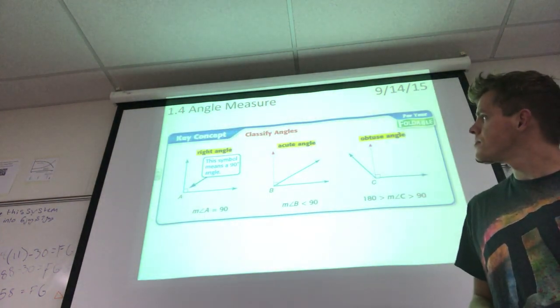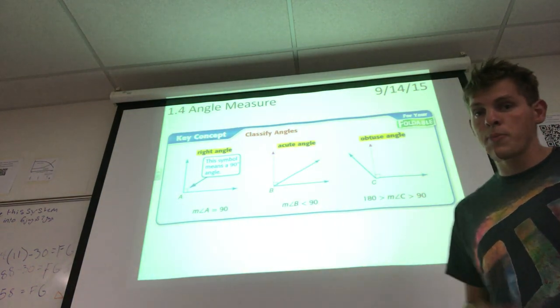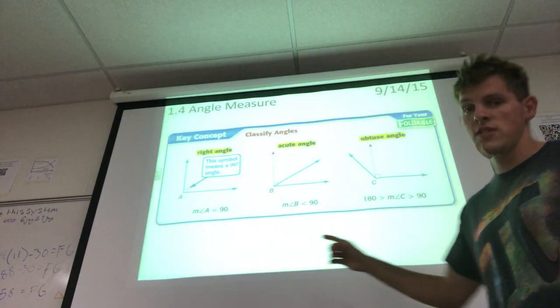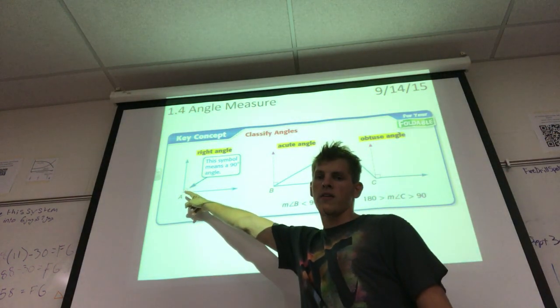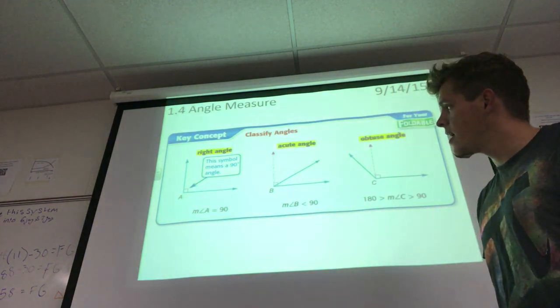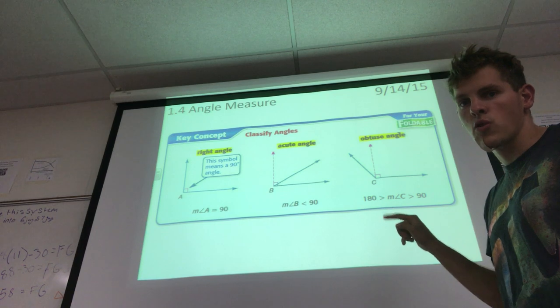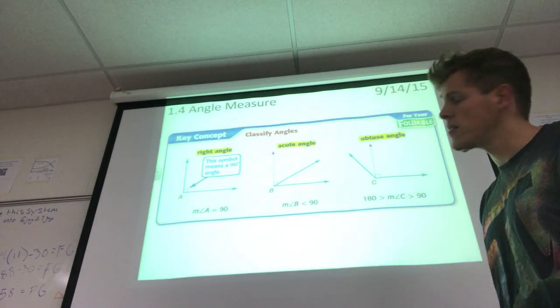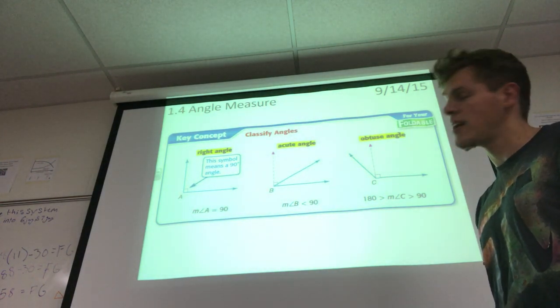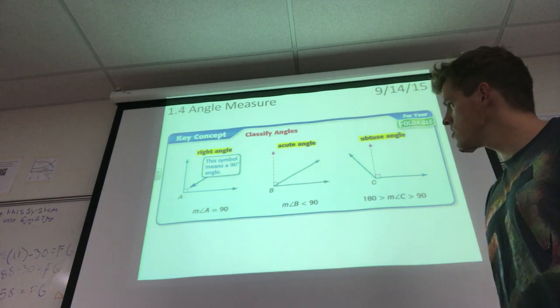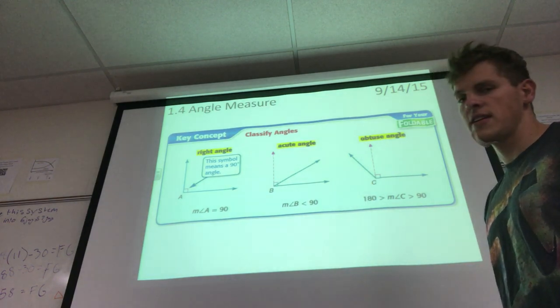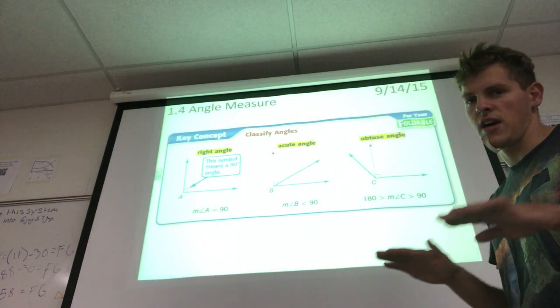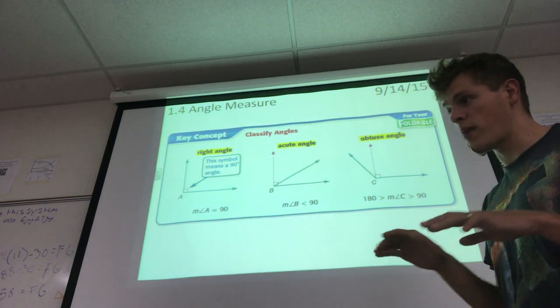Right angles: the only time that you know it's a right angle is if you see that little mark right there, that little half of a square in the corner of those two rays. This symbol means that it's a 90 degree angle. If you do not see it, you cannot assume that it's 90 degrees. Acute angles are always less than 90 degrees and obtuse angles are always more than 90 degrees but less than 180 degrees.